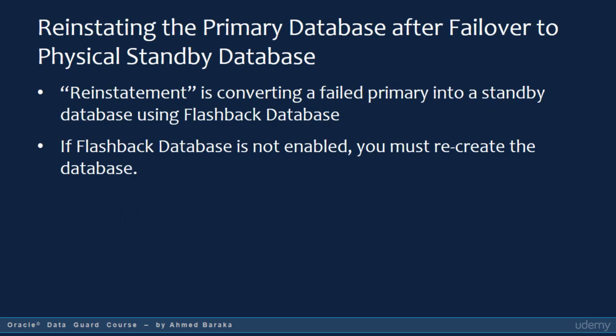After a failover is finished, the original primary database can no longer participate in the Data Guard configuration until it is repaired and established as a standby database in the new configuration. The process of converting a failed primary database into a standby database after failover is called reinstatement. To reinstate a failed primary database, the flashback database must be enabled. Otherwise, you have to recreate the standby database from scratch.